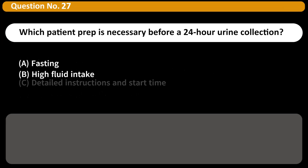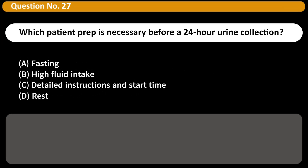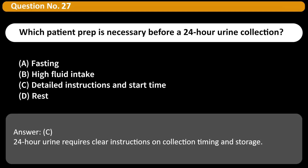Which patient prep is necessary before a 24-hour urine collection? A. Fasting. B. High fluid intake. C. Detailed instructions and start time. D. Rest. Answer: C. 24-hour urine requires clear instructions on collection timing and storage.